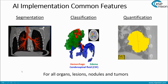Before we start delving into the specific examples I would like to show you, let's have a few quick words about the general AI and computer vision. AI can do many things, but many of them end up being categorized into one of these three big words: segmentation, classification, and quantification.